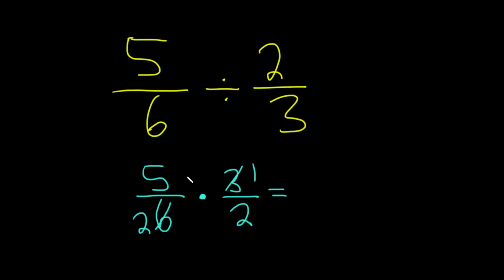So this is going to be 5 times 1, which is 5, then 2 times 2, which is 4. So 5 fourths.